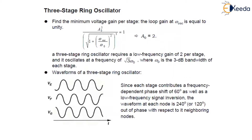Now let us find the minimum voltage gain required per stage. By the Barkhausen criteria, the loop gain at ω_osc must equal unity. So a₀³ divided by the cube of √(1 + (ω_osc/ω₀)²) equals 1. Solving this equation with ω_osc = √3 · ω₀, we get a₀ = 2. Therefore, a 3-stage ring oscillator requires a low-frequency gain of 2 per stage and oscillates at ω_osc = √3 · ω₀, where ω₀ is the 3 dB bandwidth of each stage.